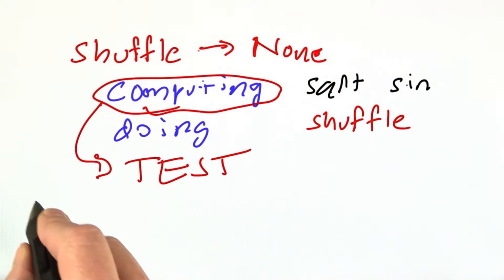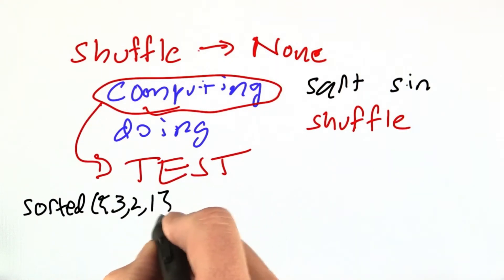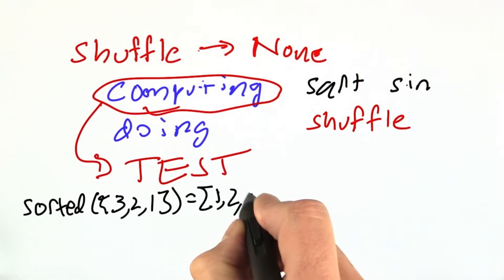I can do something like assert sorted of the list [3, 2, 1] equals [1, 2, 3].